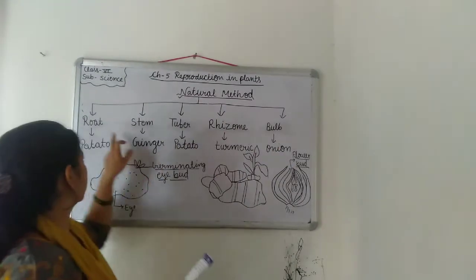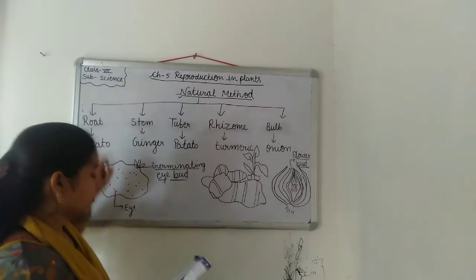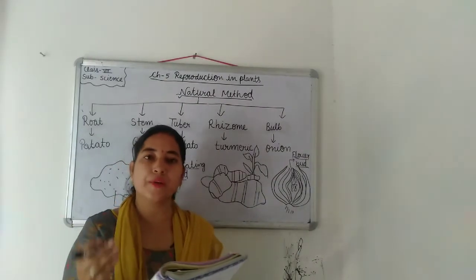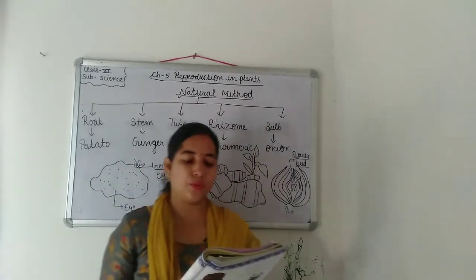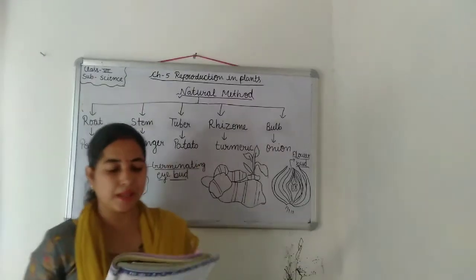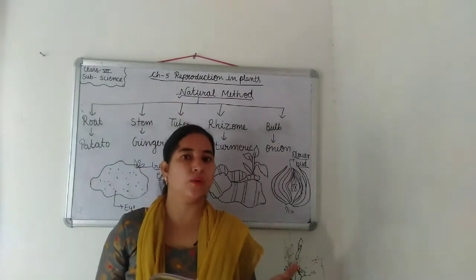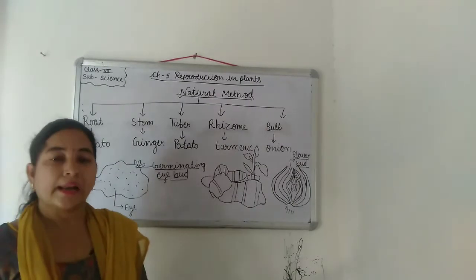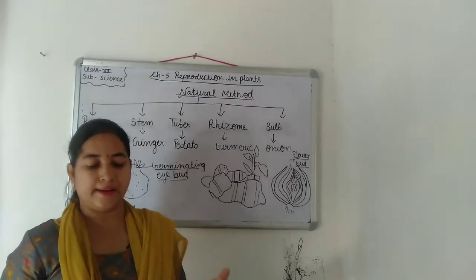First we will discuss natural methods done by root. Roots of certain plants like sweet potato and dahlia give rise to new plants from their fleshy roots. Kuch plants ki jo roots hoti hain, woh naye paudhe ko utpann karti hain apne fleshy roots se. Like the examples of sweet potato and dahlia.